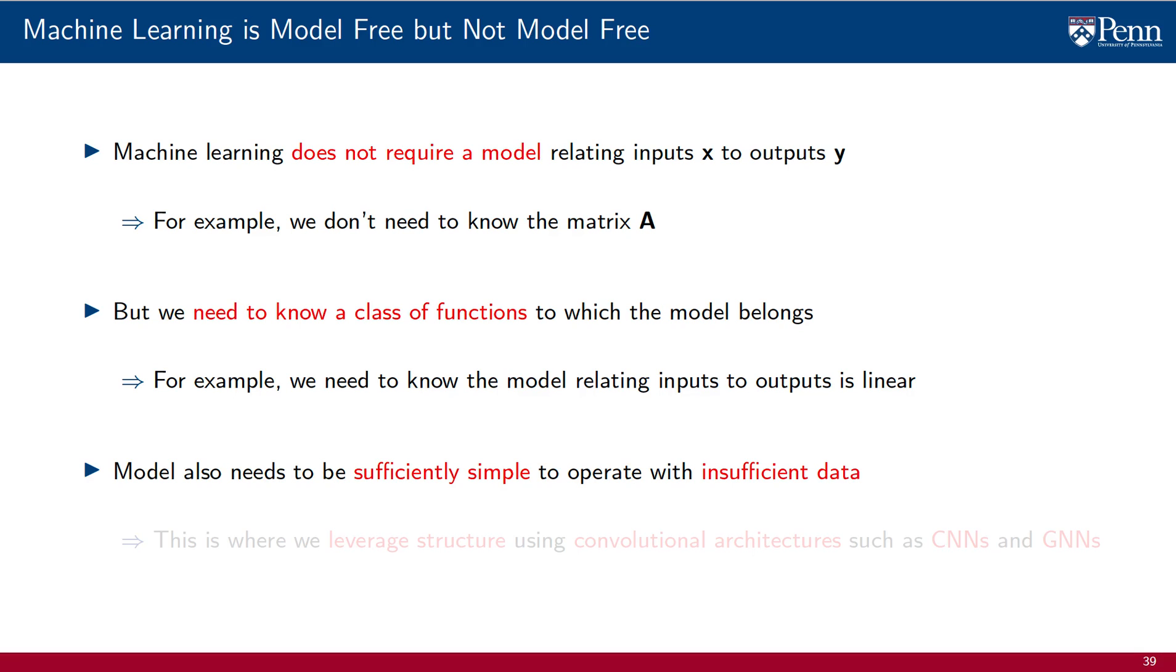But we not only need our parametrizations to match models, we need them to be of sufficiently limited complexity so that they can operate with insufficient data. Because data is always insufficient when the problem dimensions are large. This is where we leverage structures using convolutional architectures such as CNNs and GNNs. We will start doing so in the next lecture. Thank you.